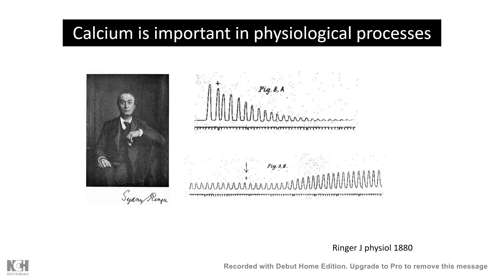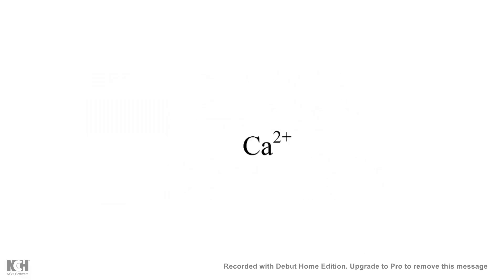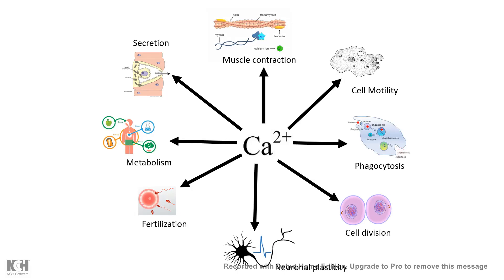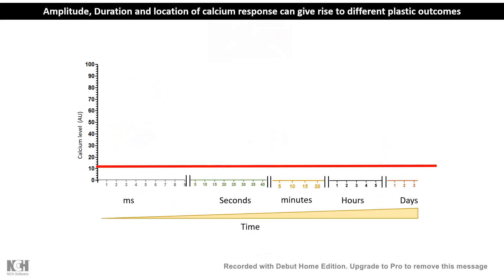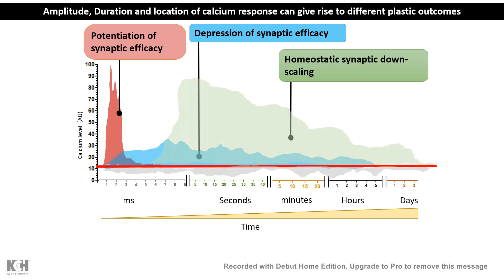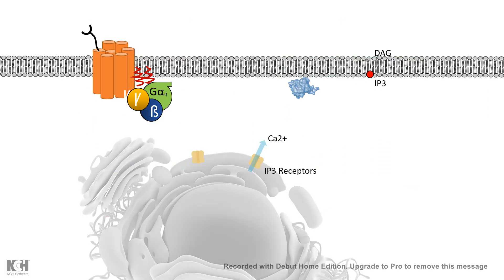Calcium is literally important for several different cellular aspects — starting from muscle contraction, secretion, metabolism, fertilization, neuronal plasticity, cell division, phagocytosis, cell motility, and many more. The level of calcium inside a neuron can give rise to different plastic outcomes. Calcium dynamics can range from milliseconds to seconds to minutes or even days, and depending upon the level and magnitude of calcium, the outcome of the plastic response is totally different.